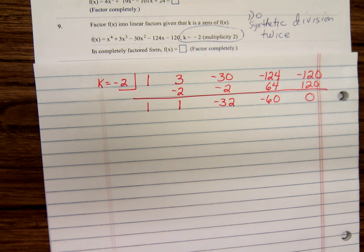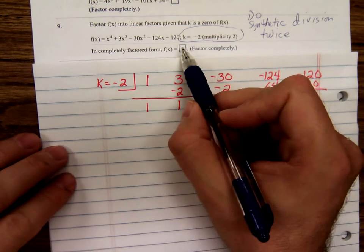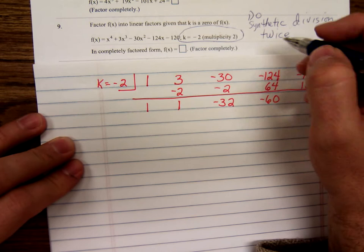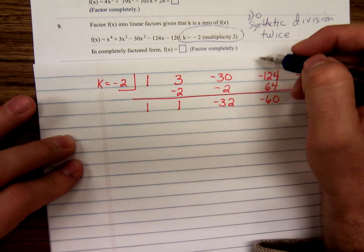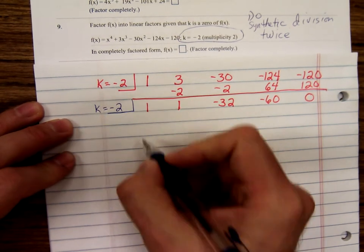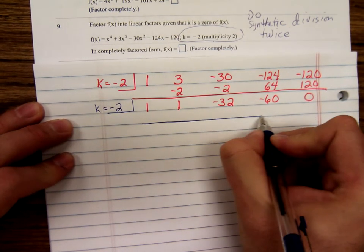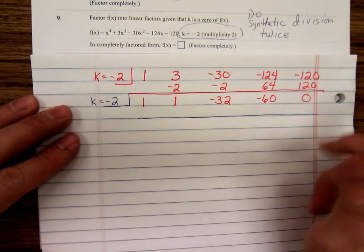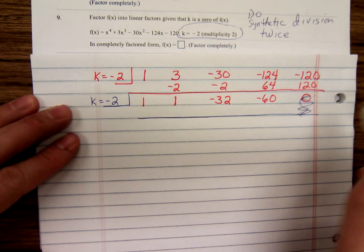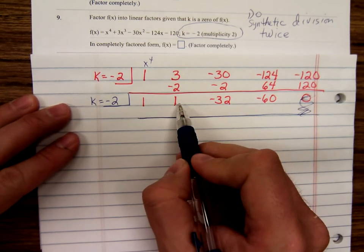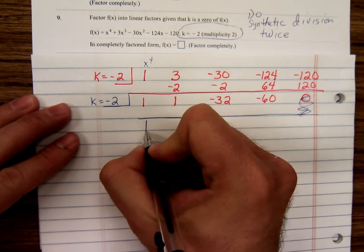Now we need to do synthetic division again. Why? Well, we're told that k equals negative two multiplicity twice. That means that x minus k is a zero twice. So, now I'm not really going to use this part here. I'm just using, let's say we started with the x to the fourth, so I'm using x to the third, x squared, x constant. I'm going to carry down the one.